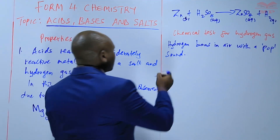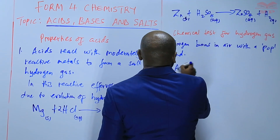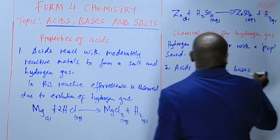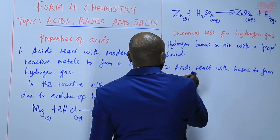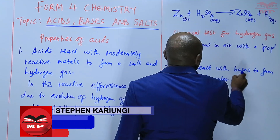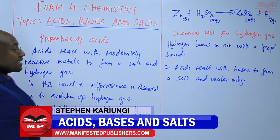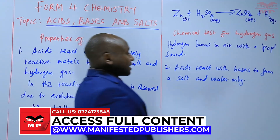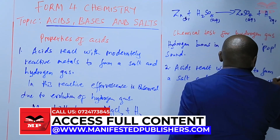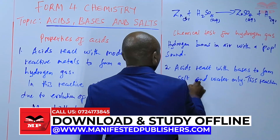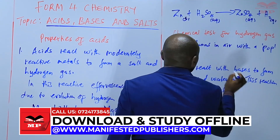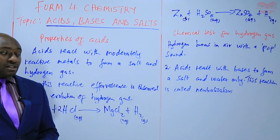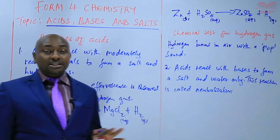The second property is that acids react with bases to form a salt and water only. When acids react with bases, we form a salt and water only. This type of reaction is called neutralization — the acid and the base are being neutralized, forming a product that is neutral.